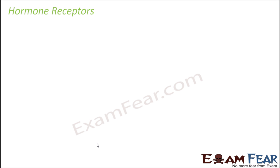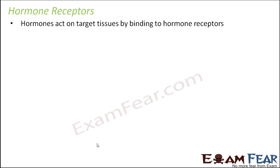For example, if you are sending a letter to somebody, you need to put the correct postal address so that there is some address which can actually receive your letter. Similarly, hormones flow through the blood, but there have to be specific receptors — specific addresses inside the body — which can receive specific hormones. Hormones act on target tissues by binding to hormone receptors.